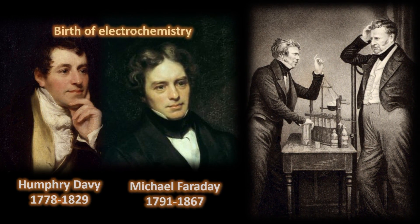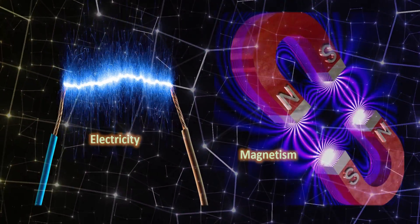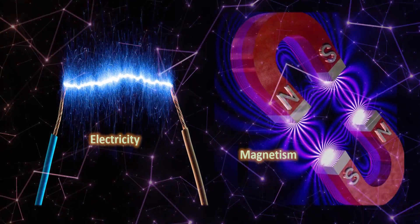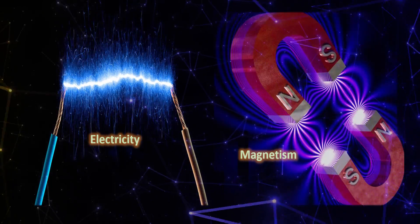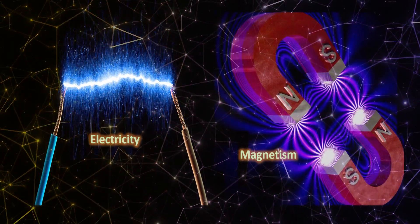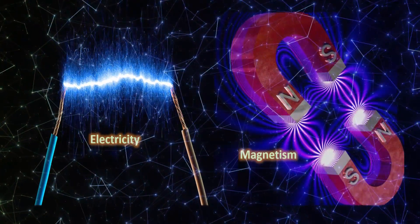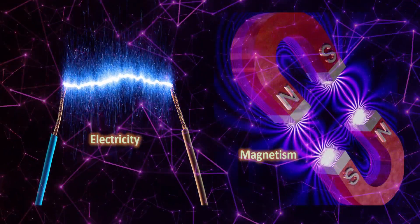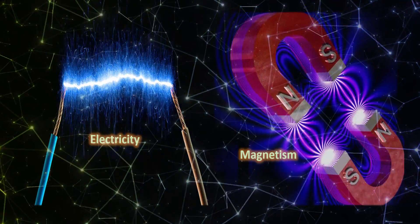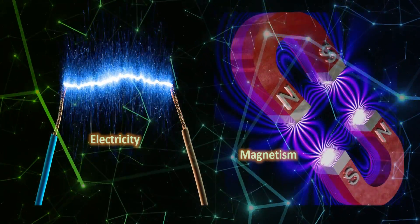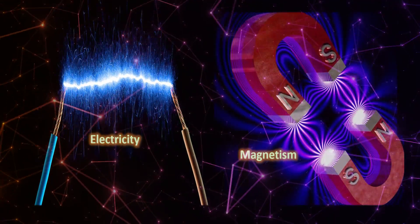Until 1820, electricity and magnetism were considered two separate forces, except for anecdotal accounts of mariners who noticed that lightning strikes had the ability to disturb a compass needle. No systematic experiments were conducted. Just as electricity changed chemistry and gave birth to electrochemistry, the intersection of electricity and magnetism had arrived.